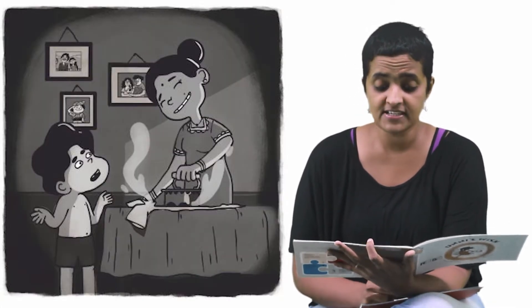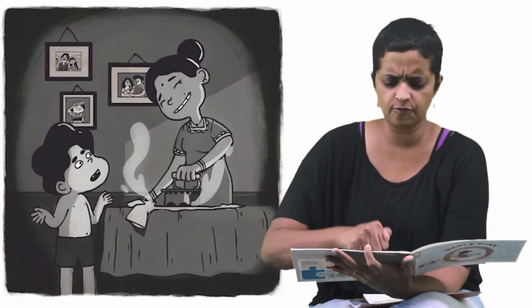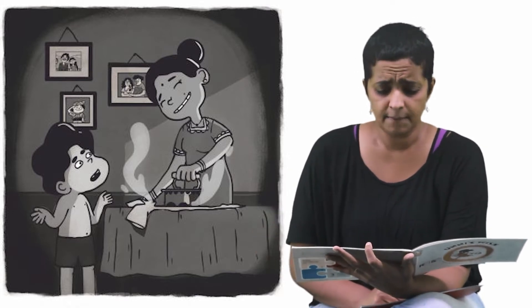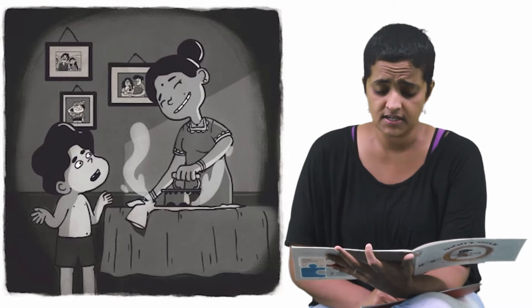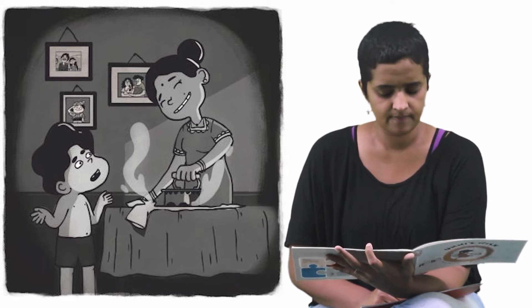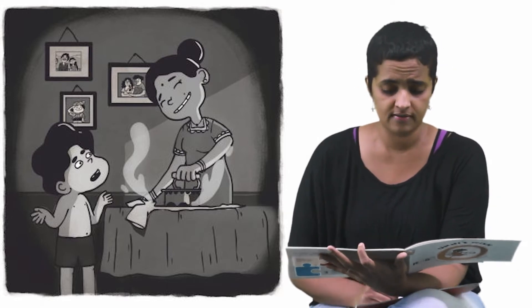He finds Amma pressing his school uniform with an iron full of hot coal. Amma, who are those men working outside our house? asks Unni. You'll find out soon. Now go and eat your idlis before they become cold, replies Amma with a mysterious smile.